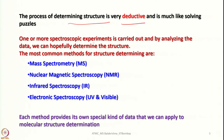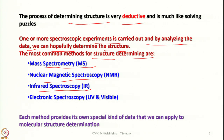One or more spectroscopic experiments are carried out and by analyzing the data we can hopefully determine the structure. The most common methods for structure determination are mass spectrometry, nuclear magnetic resonance spectroscopy (NMR), infrared spectroscopy (IR), and electronic spectroscopy (UV and visible). Each method provides its own special kind of data that we apply to molecular structure determination, and when we club together all this information we can understand the structure of a molecule without ambiguity.